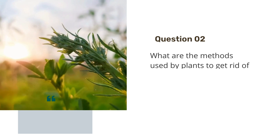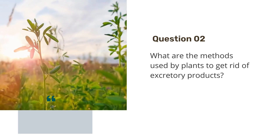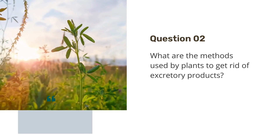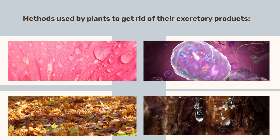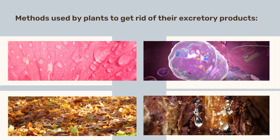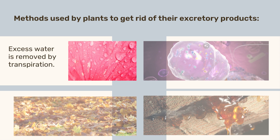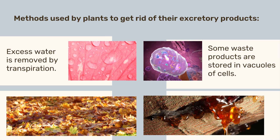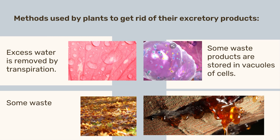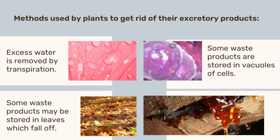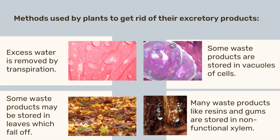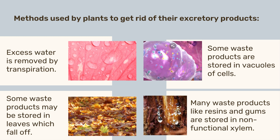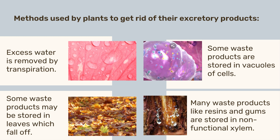The next question is: what are the methods used by plants to get rid of excretory products? Methods used are: excess water is removed by transpiration; some waste products are stored in vacuoles of cells; some waste products may be stored in leaves which eventually fall off; and many waste products like resins and gums are stored in non-functional xylem.